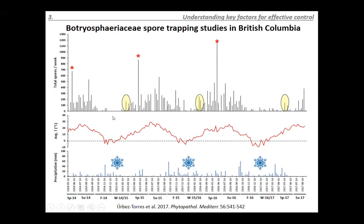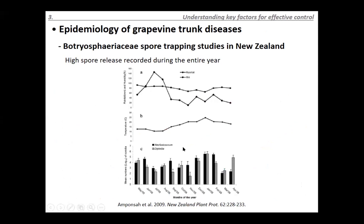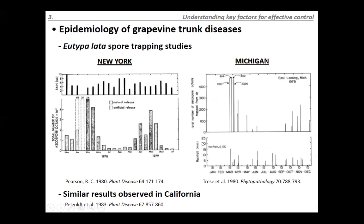Studies in Michigan on Eutypa lata susceptibility showed the most infection occurred in pruning wounds when pruning was done in March, April, or May. Up to 40% infection was obtained when pruning in February. Critically, the temperature after pruning was found to be key: the greater the percentage of the two-week period following pruning where temperature was 5°C or lower, the lower the resulting infection rate. This is consistent with observations in British Columbia, where higher spore discharge occurs when temperatures rise above 5–6°C.